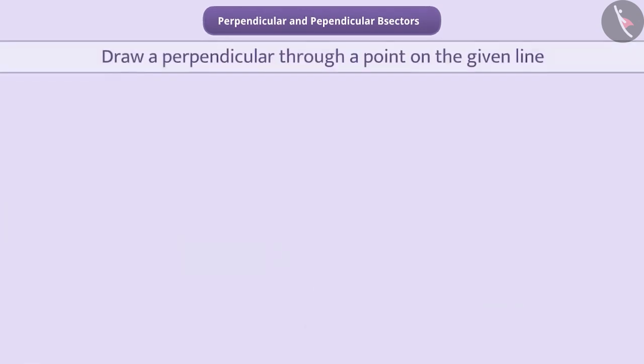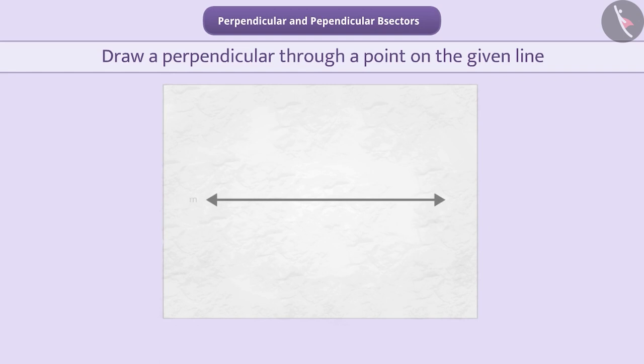Let us understand some interesting methods to construct a perpendicular passing through a point on a given line. Here, we have a paper on which a line M is drawn. We have to draw a perpendicular line which passes through point B on this line.